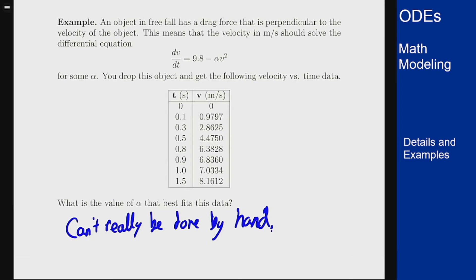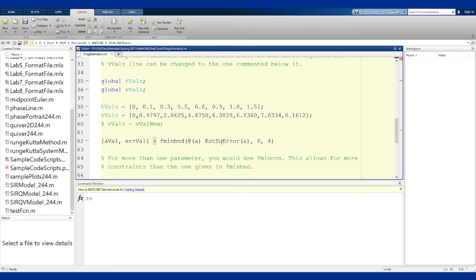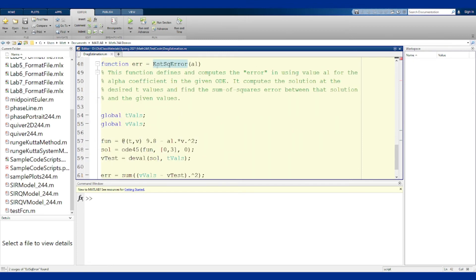This is not something that can be done by hand, so we're going to turn to MATLAB. The basic idea is I want to figure out the difference between the data that I get and the solution for a value of alpha, and minimize that over all positive values of alpha. This estimated squared error function computes the error between using the input value of a and the data that you're given.